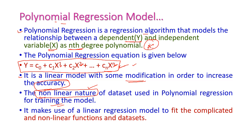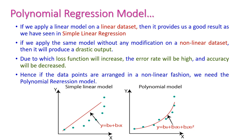A non-linear dataset will not give an accurate result in the simple linear regression model. To make use of the linear regression model to fit complicated and non-linear functions as well as non-linear datasets, the simple linear regression model is converted into a polynomial regression model by raising the power of predictors. If the dataset is linear, we can apply the linear regression model — that is called simple linear regression — and it will provide a very good result.